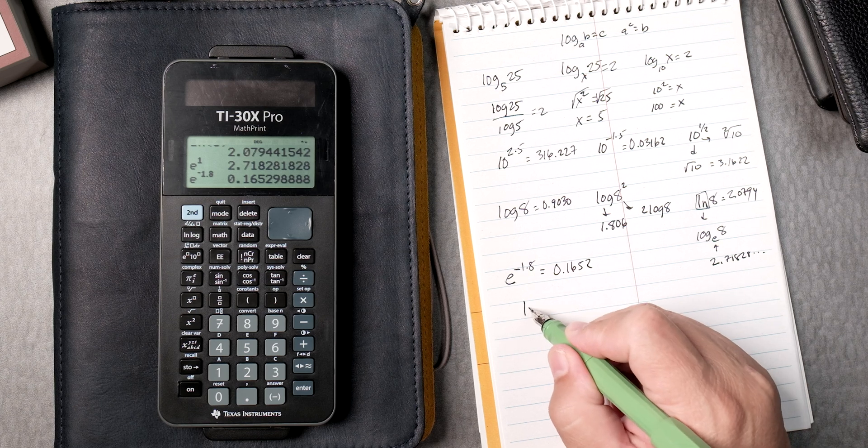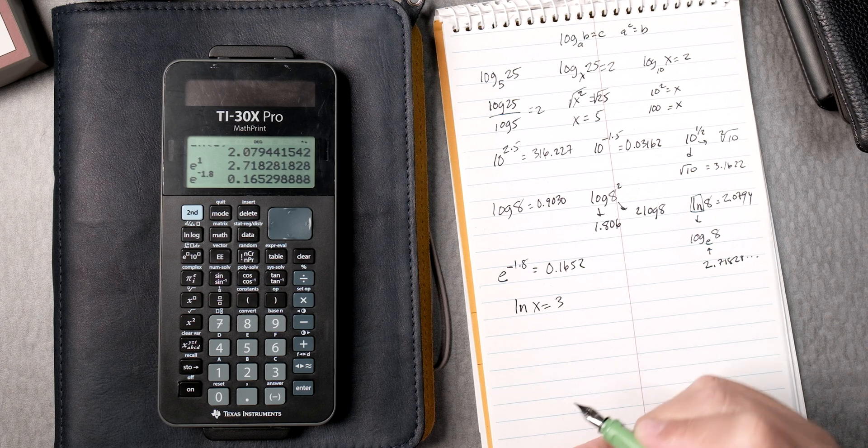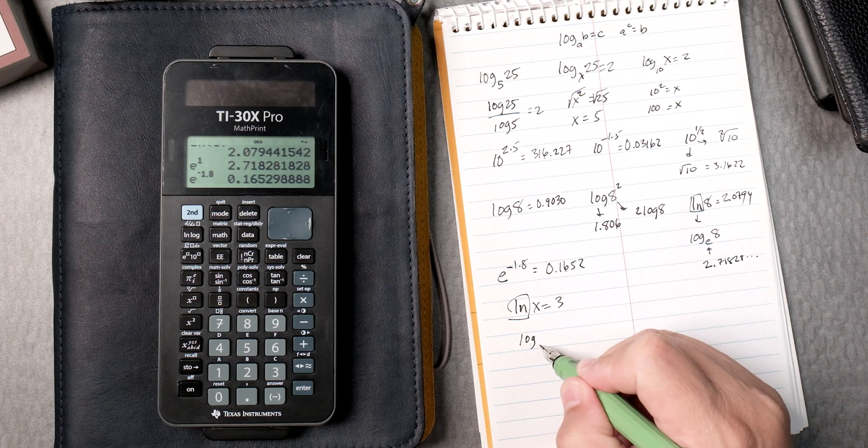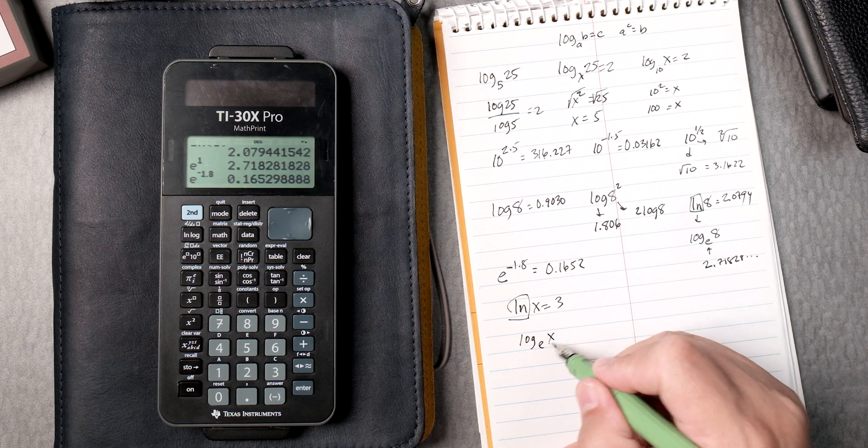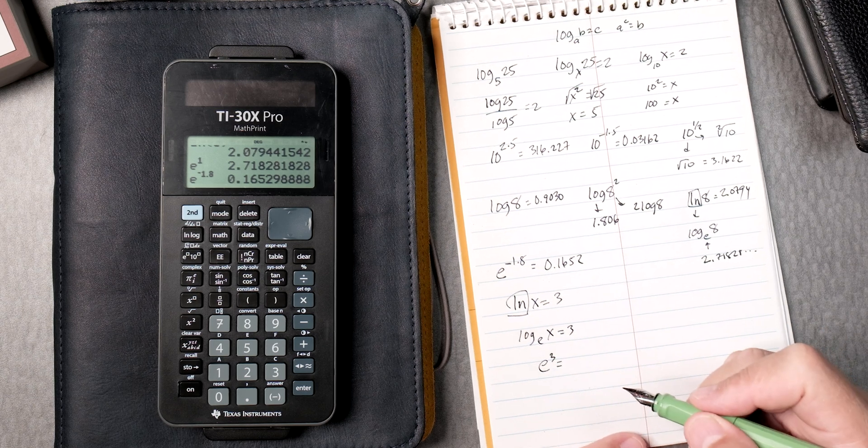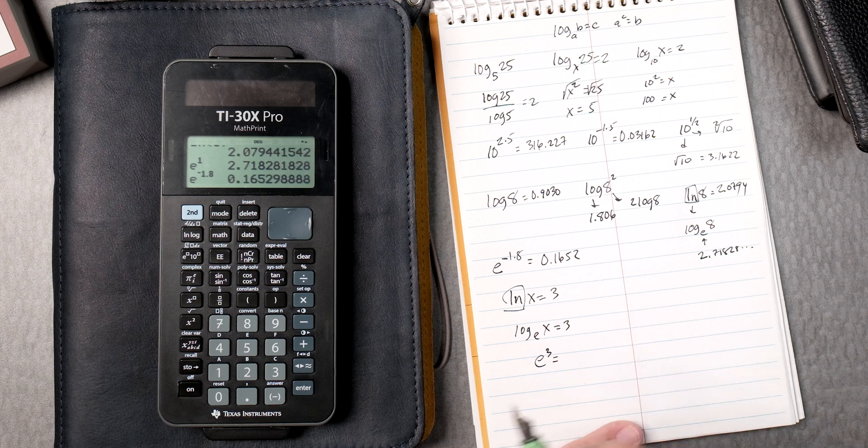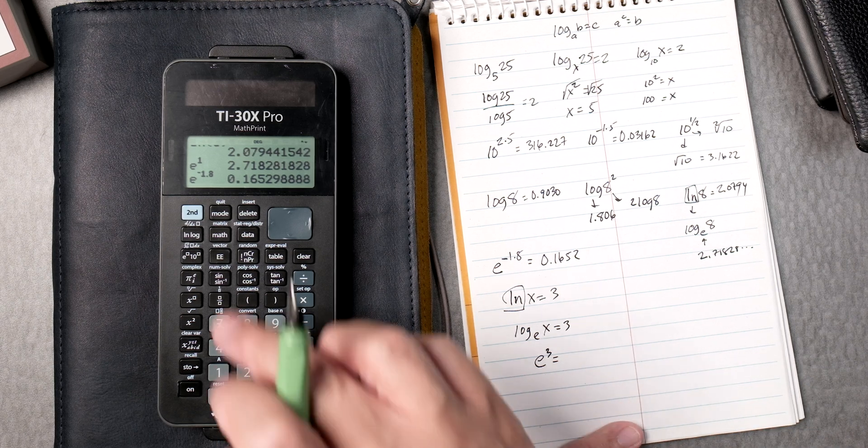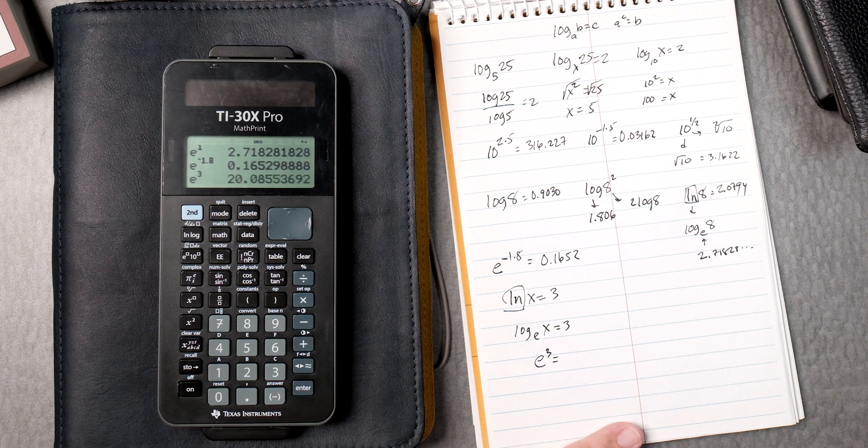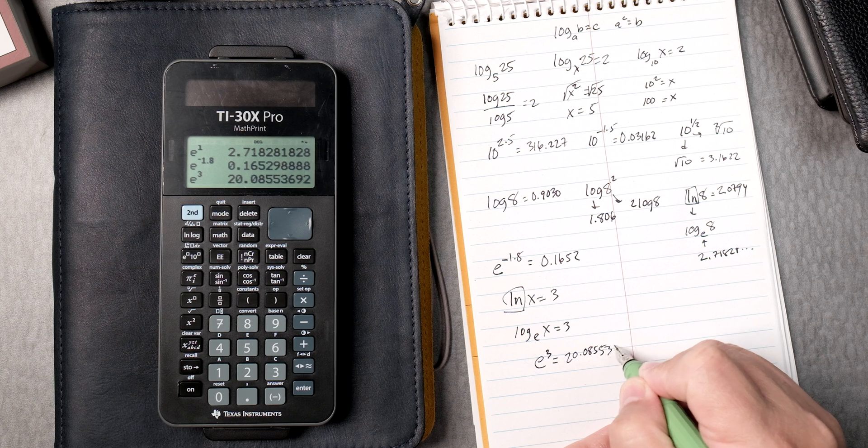And then lastly, what about if you had the natural log of x equals 3? Remember the natural log is really the log base e. And then you have x equals 3. Then you have that rule, e to the 3rd, right? And e to the 3rd is what? Well, you press in e, 3. It gives you this long number, 20.085536.